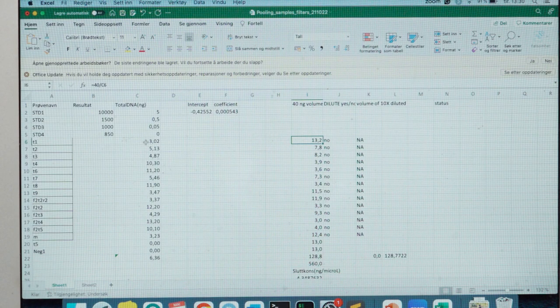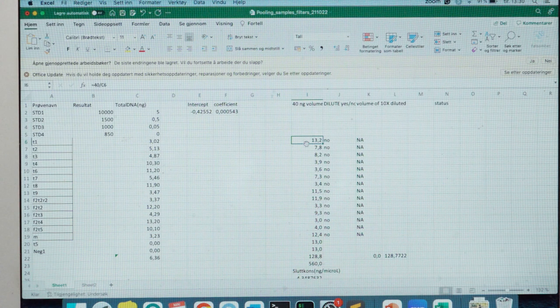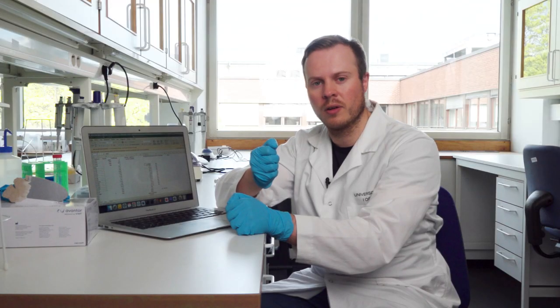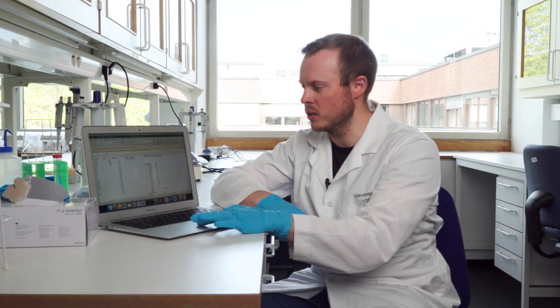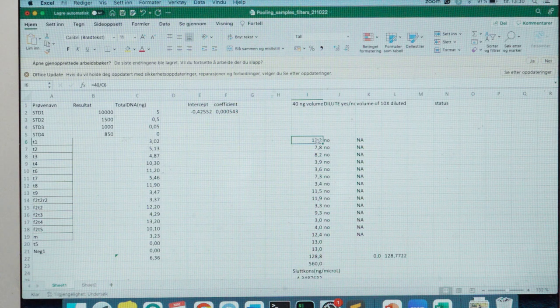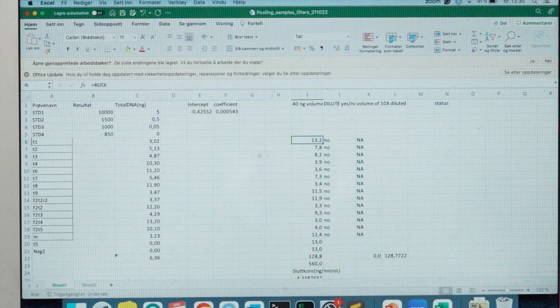But here I use 40 nanograms as an example. This means that from this sample one where I have 3.02 nanograms per microliter of DNA, I need to take out 13.2 microliters of the PCR tube and transfer it to the pool. So this is the volume I need from this sample. And if you take 13.2 and multiply it by 3.02, then you get 40. That's kind of the connection here.